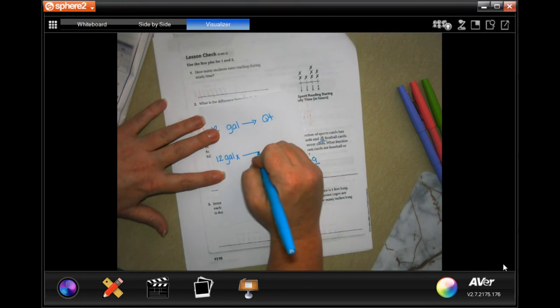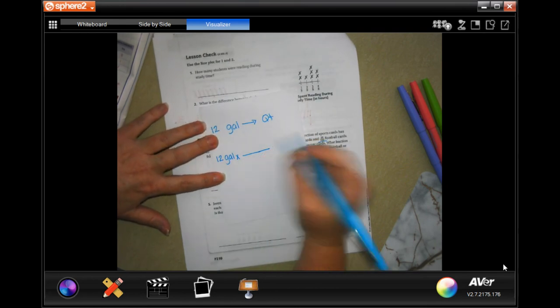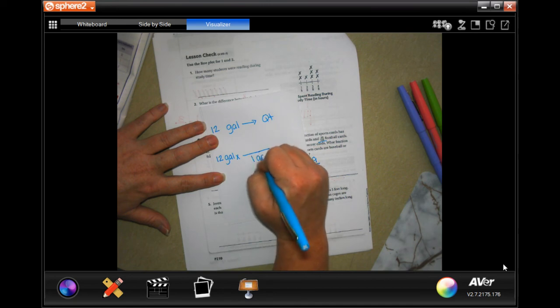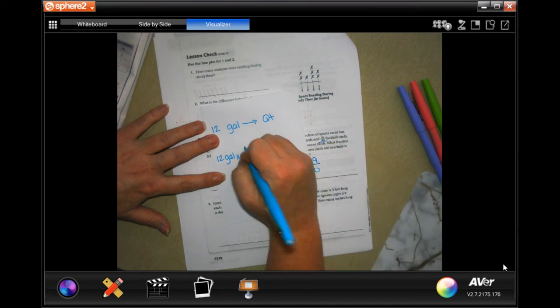I'm going to start with what I know, which is 12 gallons. That's what it gave me. Now I know that in one gallon there are four quarts.